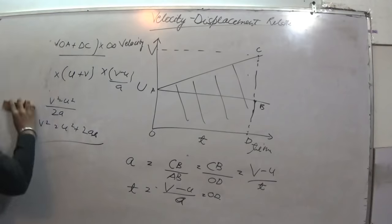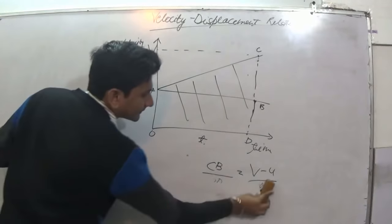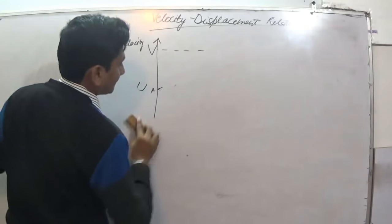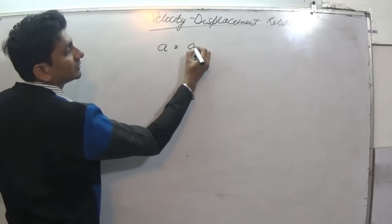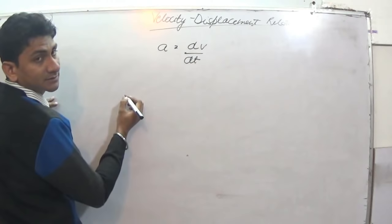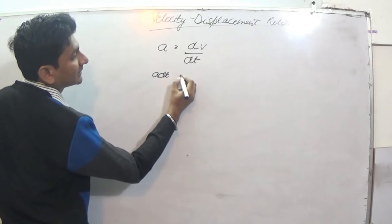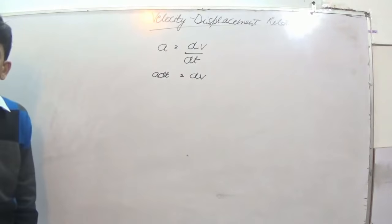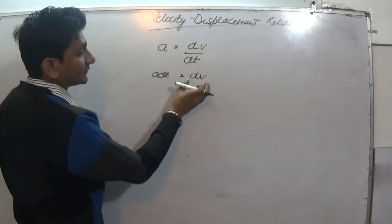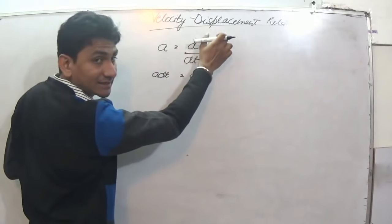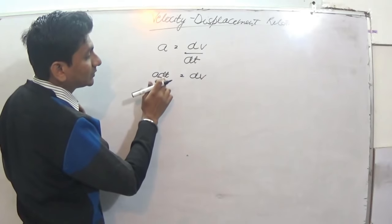Let us go with calculus method. Again, we have a is equal to dv upon dt. We get a dt is equal to dv.